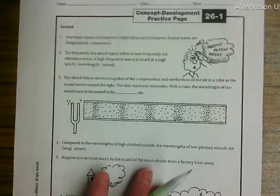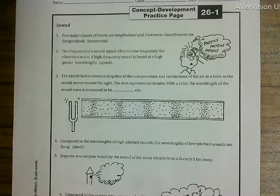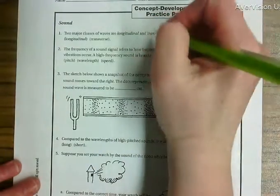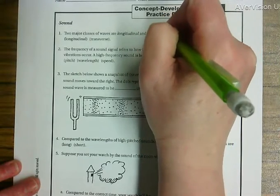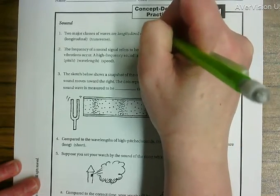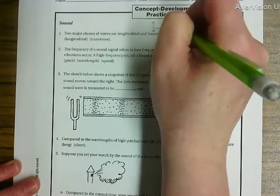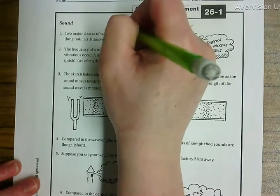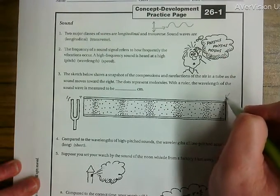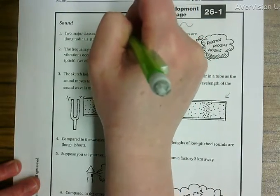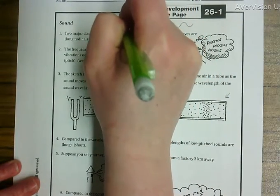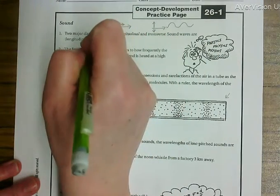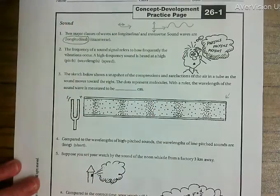We see our first question here is talking about two major classes of waves being longitudinal and transverse. Remember that transverse, the wave moves this direction but the medium goes up and down, and these we typically draw as like the sine wave. For the class longitudinal, they move this way and the particles vibrate back and forth. Sound waves are indeed a longitudinal wave.